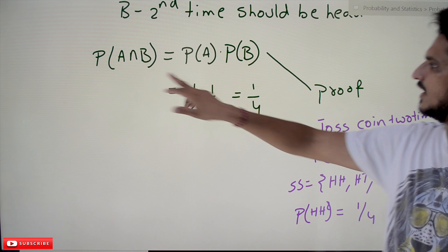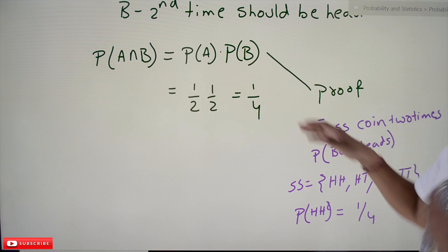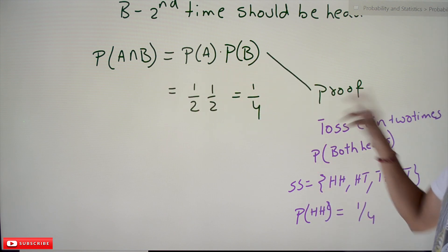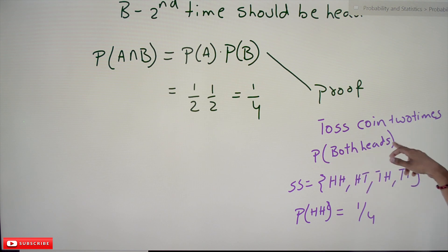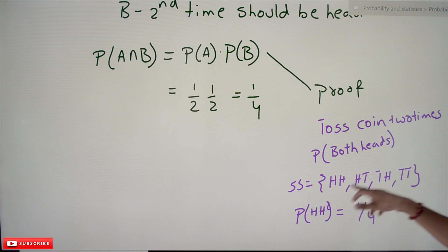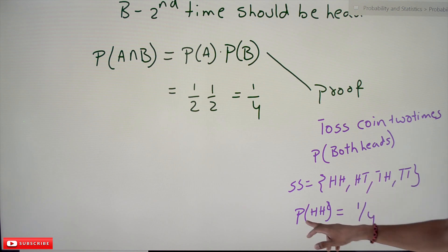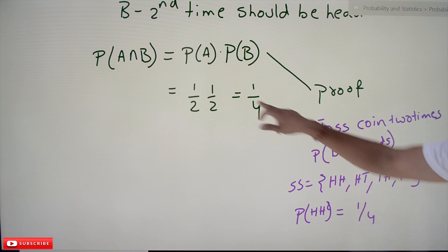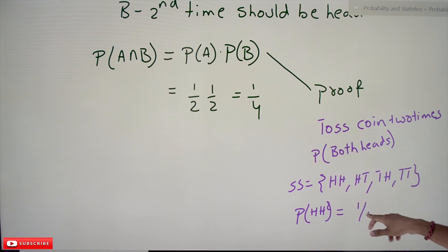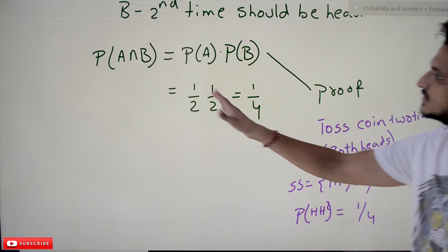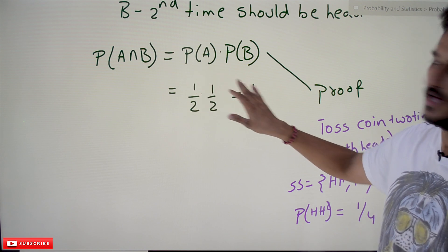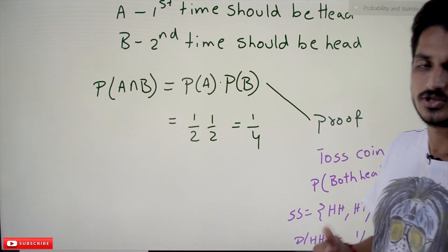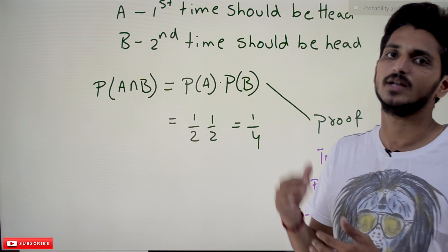We will verify this formula with an example. Toss a coin two times — what is the probability of both heads? The sample space is: head-head, head-tail, tail-head, tail-tail. Probability of head-head is 1 out of 4, so 1/4. We got the same output, confirming the equation for independent events. For dependent events the equation is different — we'll discuss conditional probability in our next class.